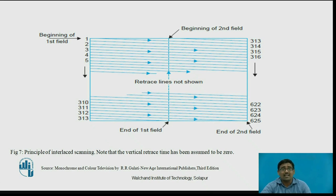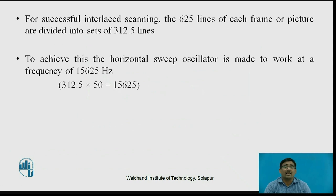After reaching the midpoint, the retrace path begins, starting the second field. The scanning is different for odd lines and even lines. For successful interlaced scanning, the 625 lines of each frame or picture are divided into sets of 312.5 lines. To achieve this, the horizontal sweep oscillator is made to work at a frequency of 15,625 Hz, calculated as 312.5 × 50 = 15,625.